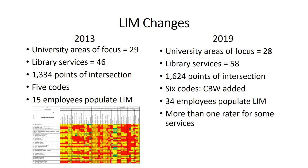This resulted in an increase from 1,334 points of intersection to 1,624 points of intersection. We also introduced another code for 2019 that could be used when an individual wanted to start collecting data. Finally, in 2013 we had 15 employees populate the LIM. In 2019, we asked 34 employees who had direct responsibility over or experience with each library service to populate the library impact map. In some instances, there was more than one rater for one library service.